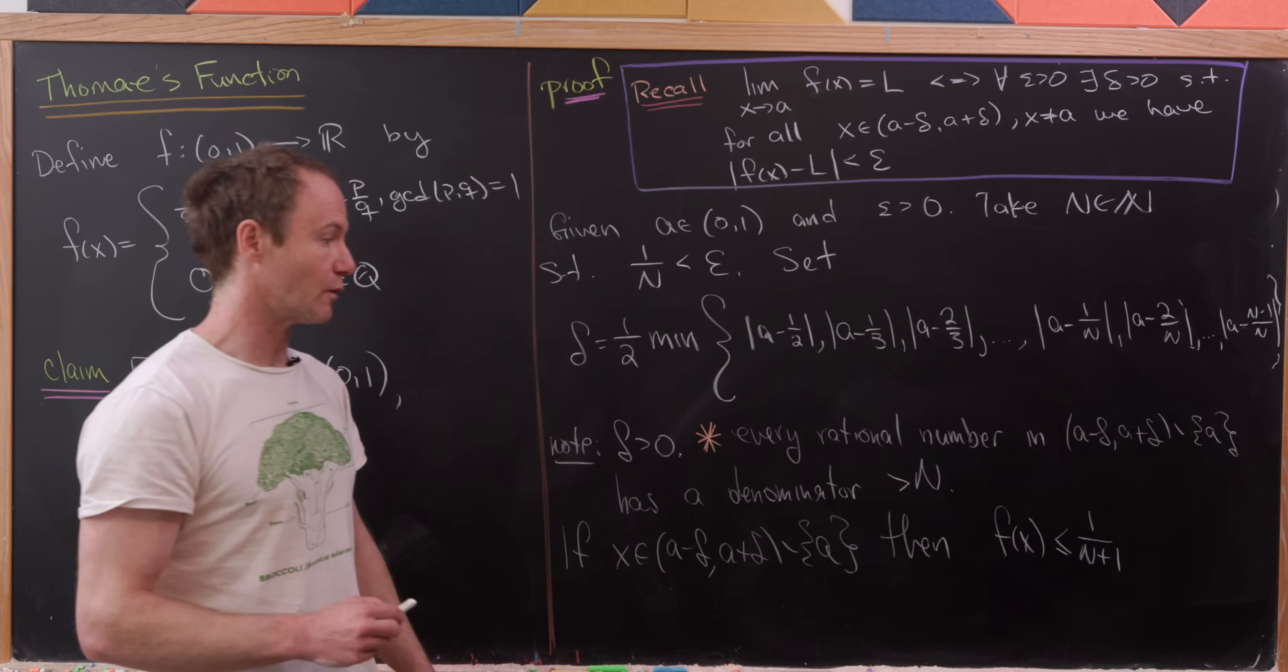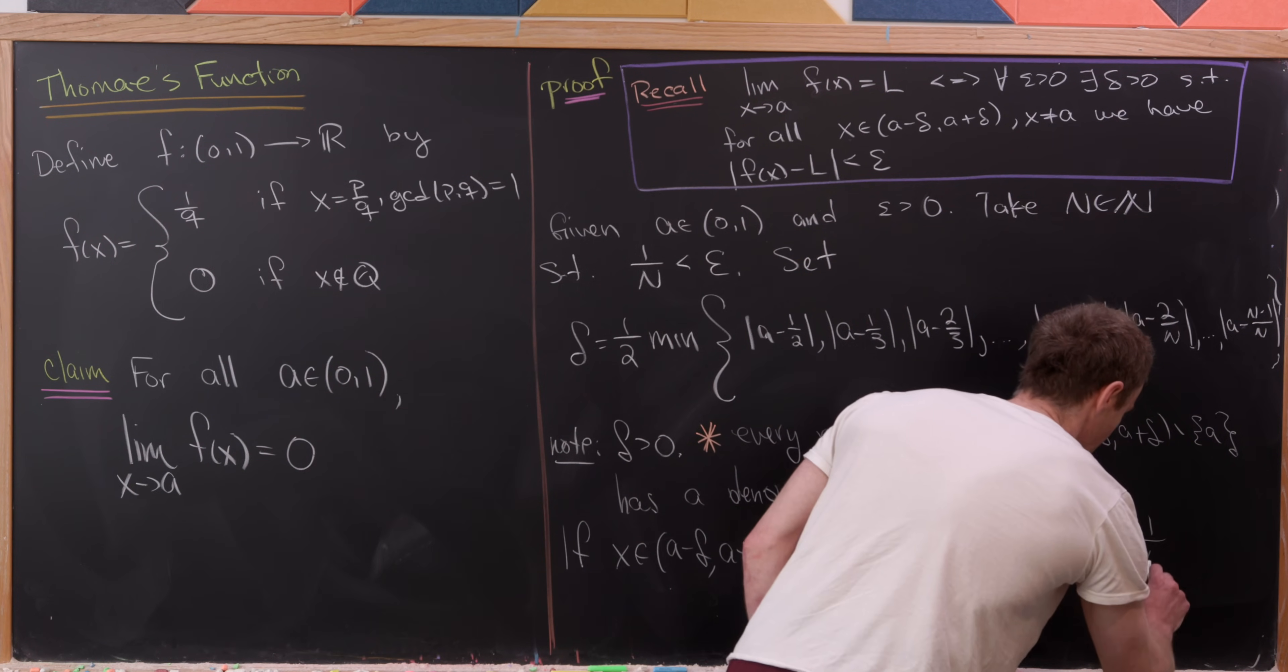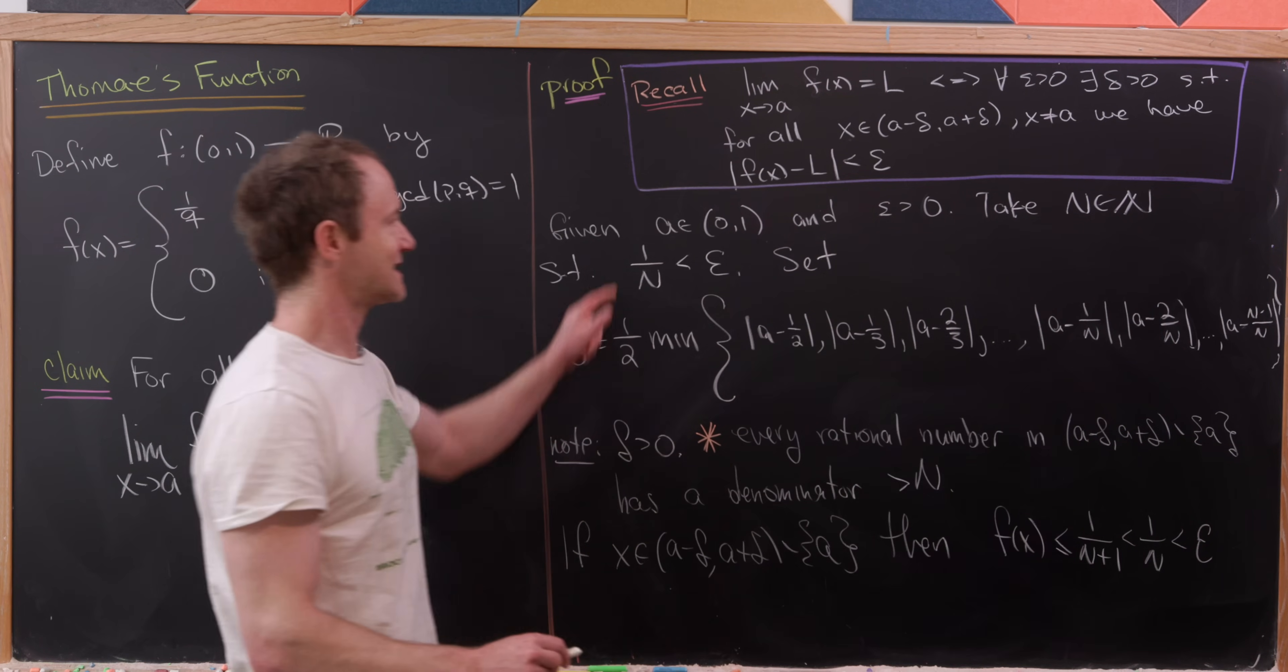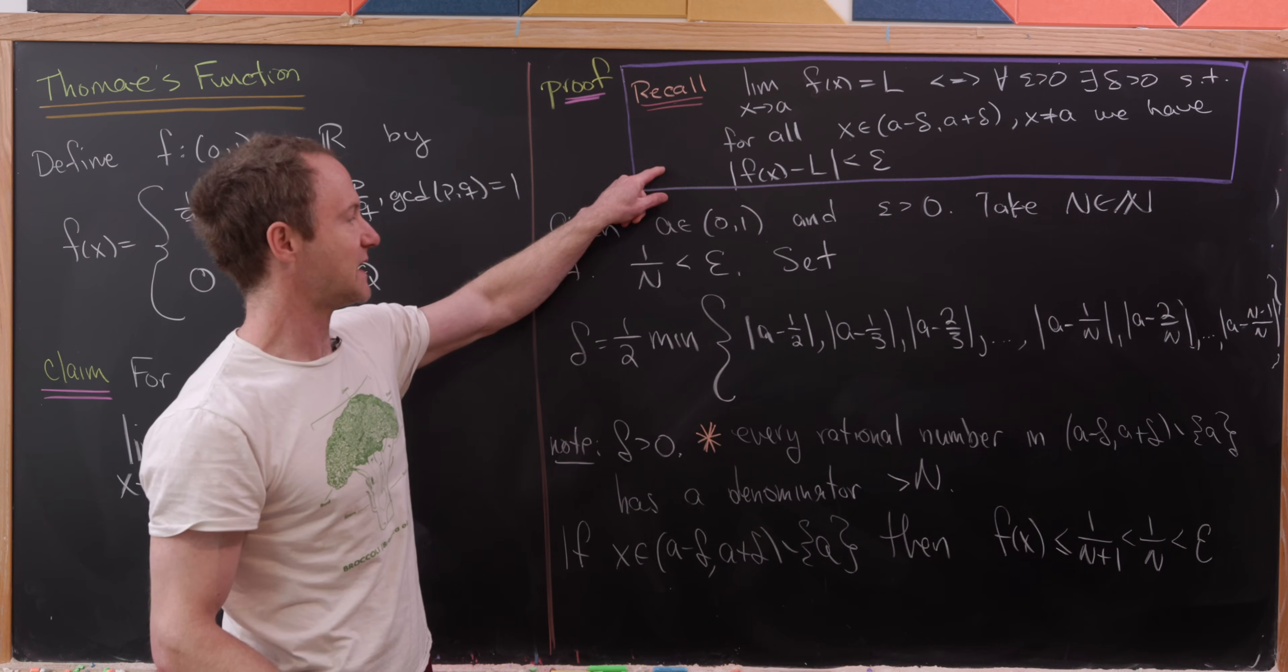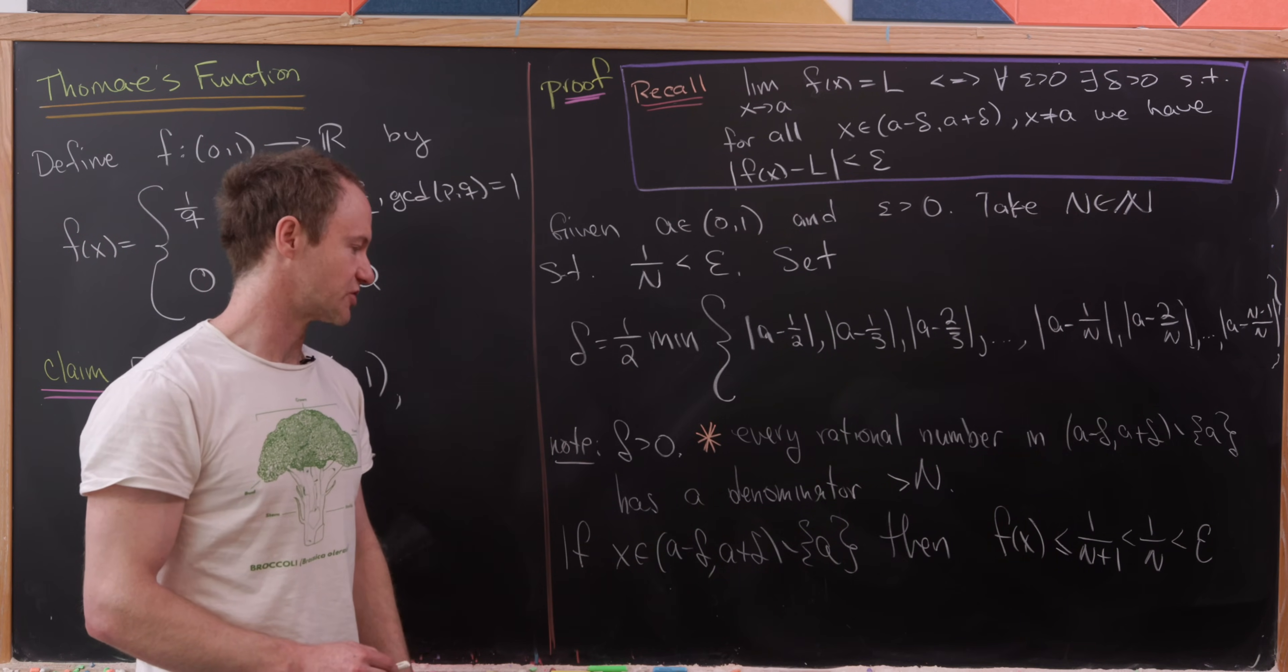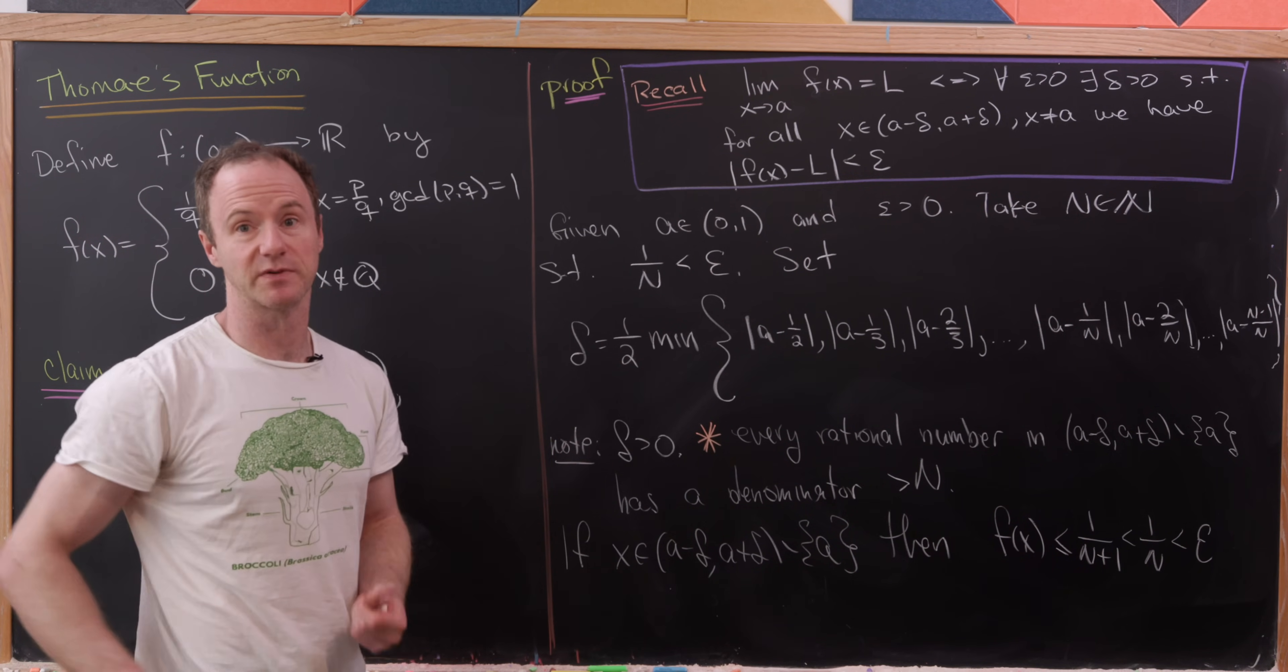But anyway, in the end, we see that 1 over N plus 1 is strictly less than 1 over N, which is less than epsilon. But notice that's exactly what we need from up here to show that, yes, the limit of this function is equal to 0. And that's a good place to stop.